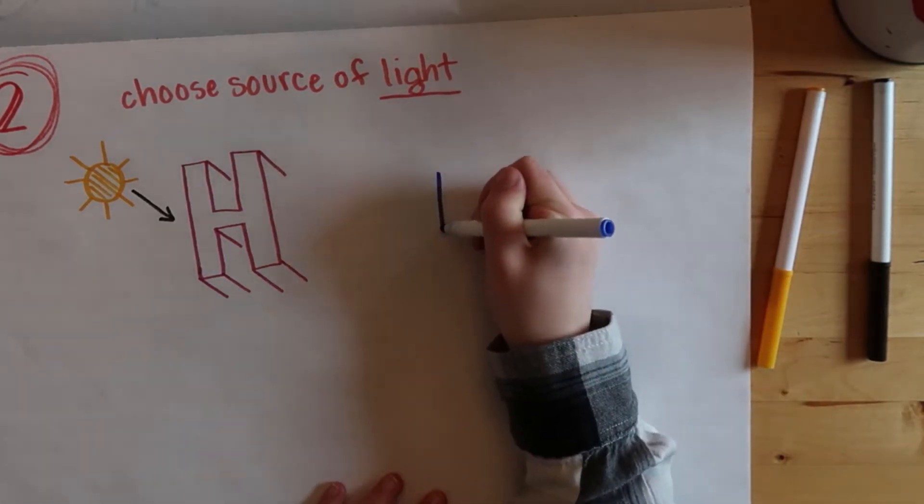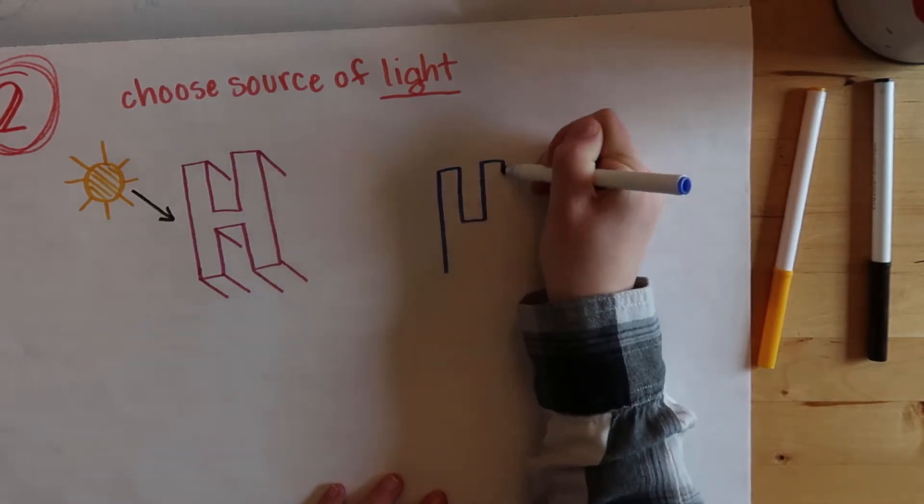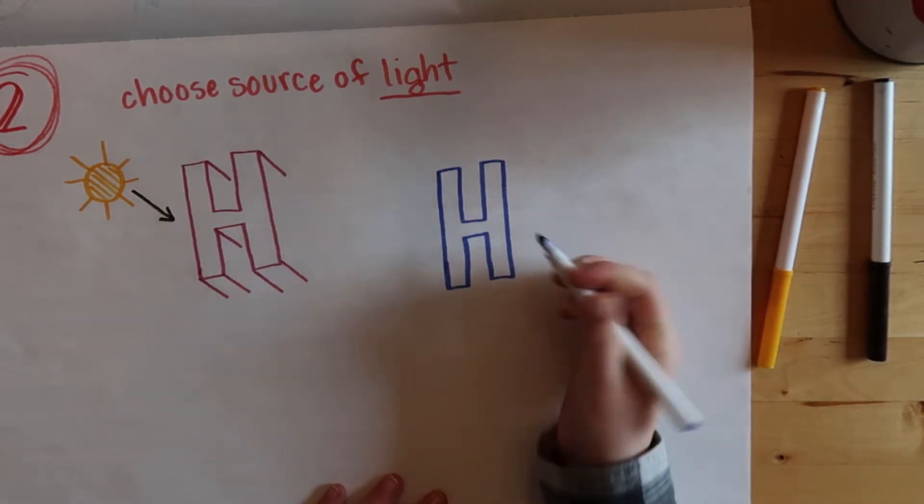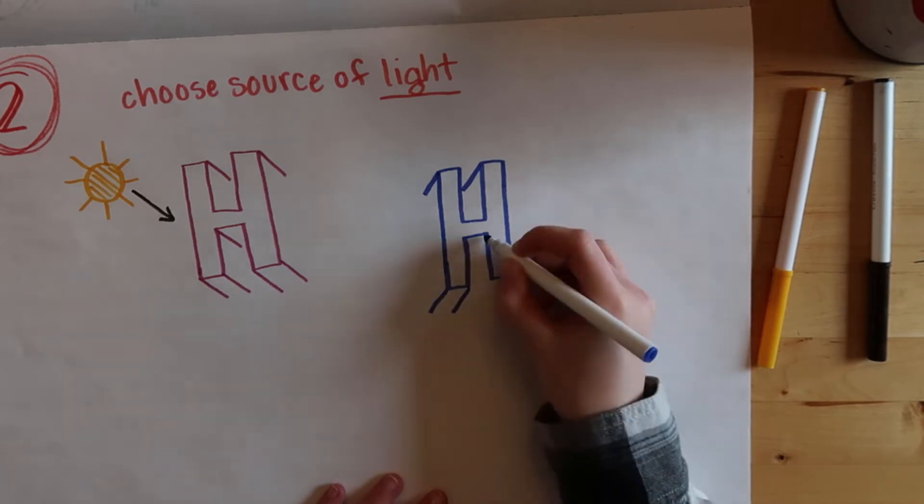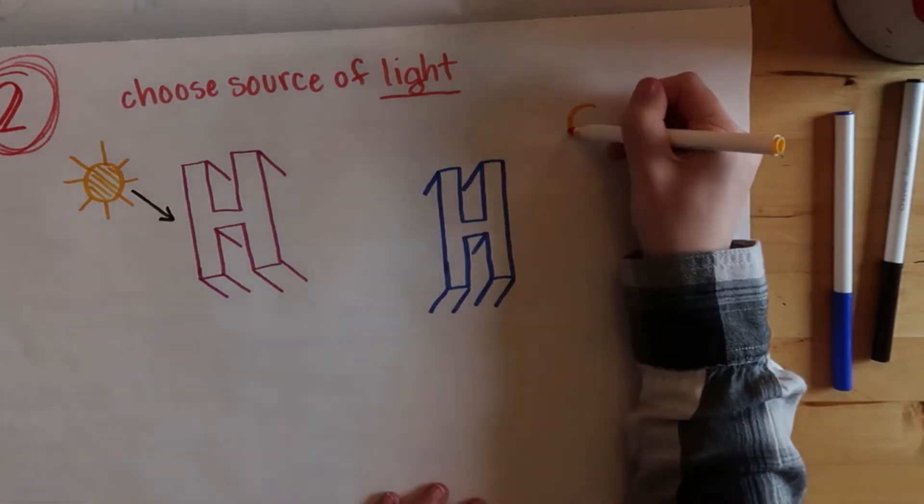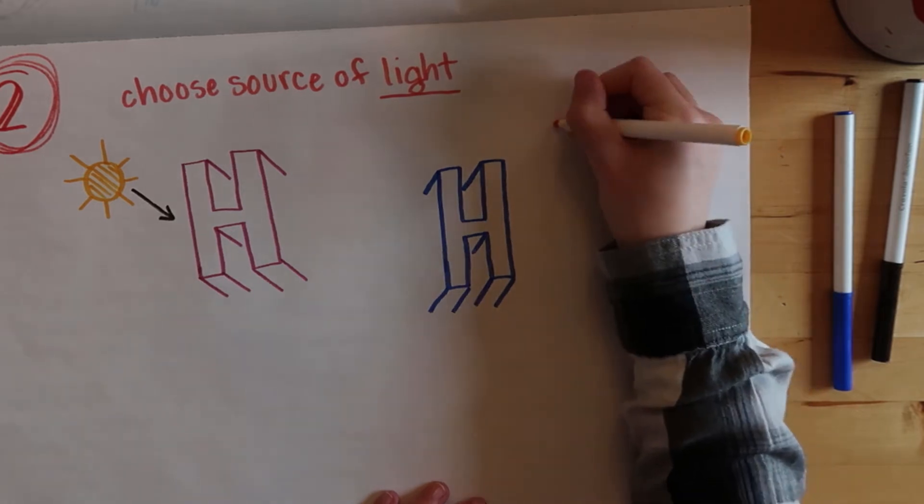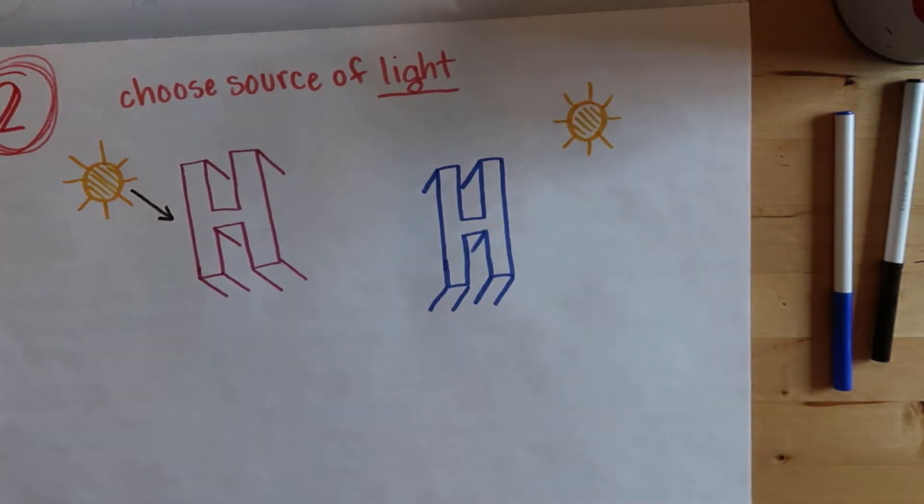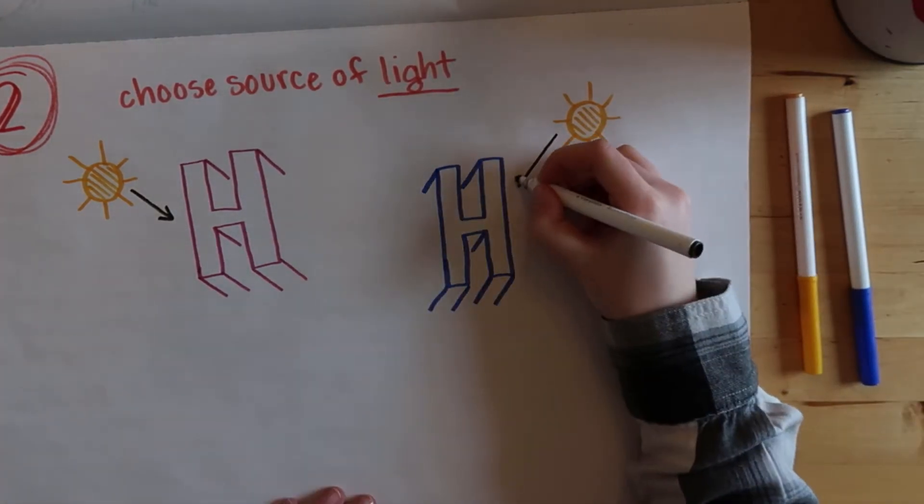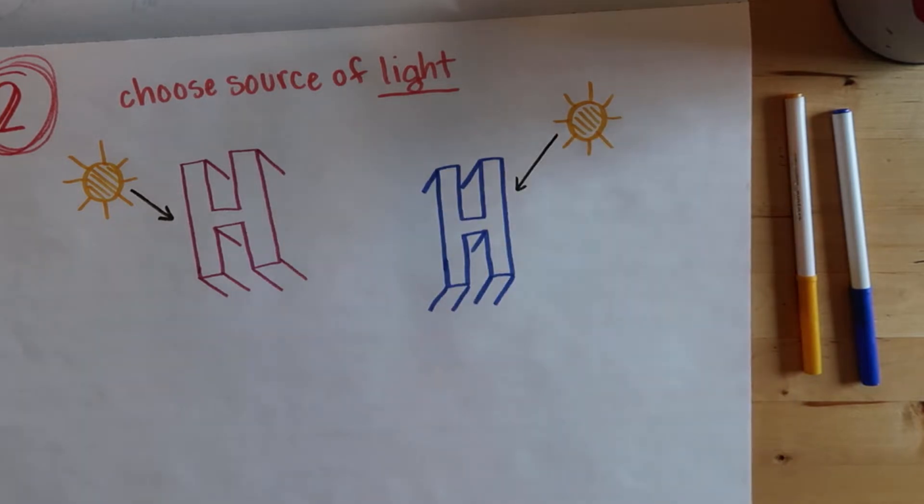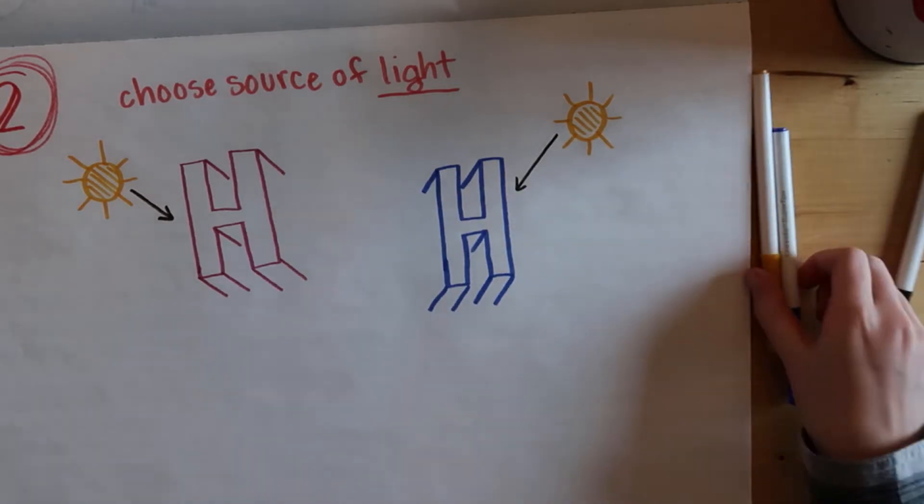It doesn't matter where, you just have to choose a place where the light's coming from so that you know where to put your shadows from. Typically your shadow lines go opposite of the light source, and it looks better if you keep the light source and the shadows the same for all the letters in whatever you're doing.